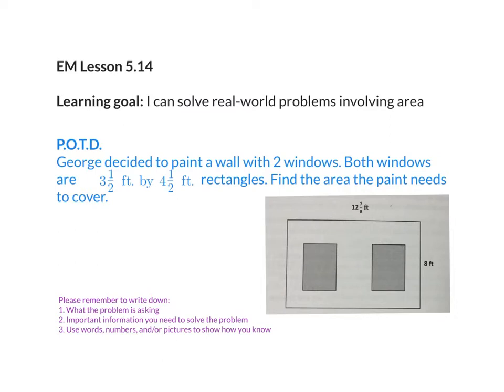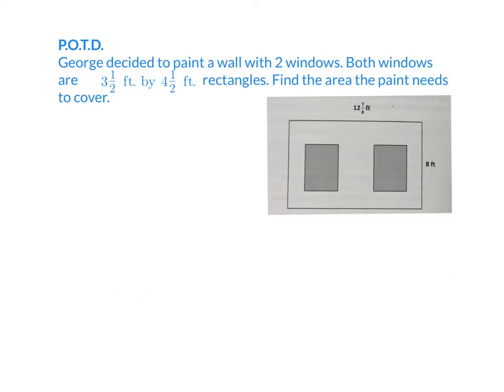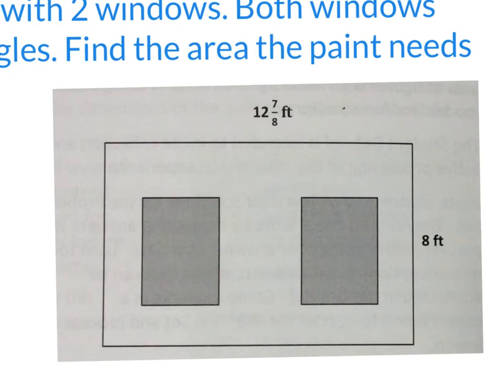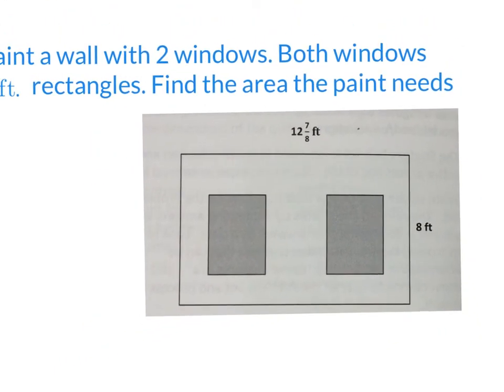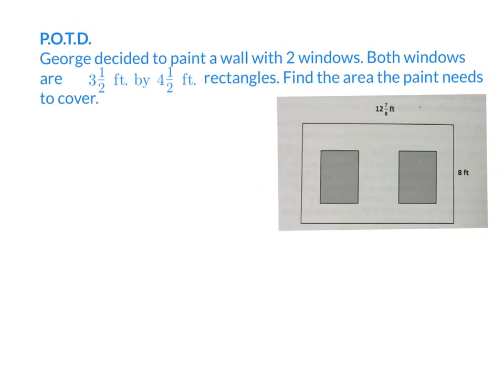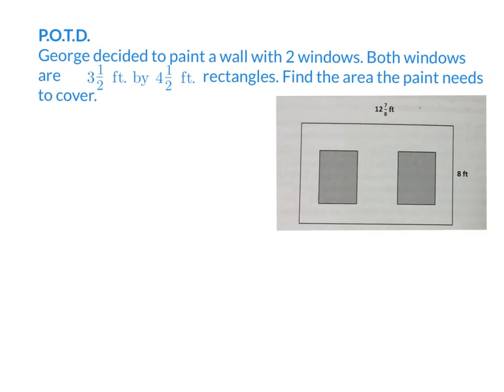So let's start by taking a look at our problem of the day. It says George decided to paint a wall with two windows. So we can see here that the window is the outer rectangle and the two shaded areas are the windows. So he wants to paint a wall with two windows. Both windows are 3 1/2 feet by 4 1/2 feet rectangles. Find the area that the paint needs to cover.